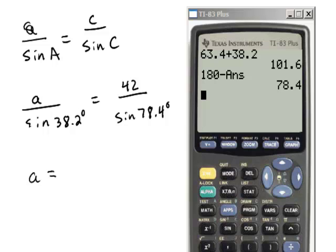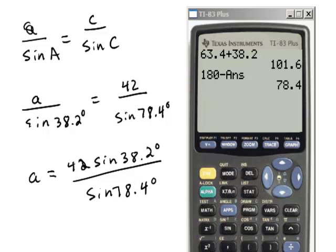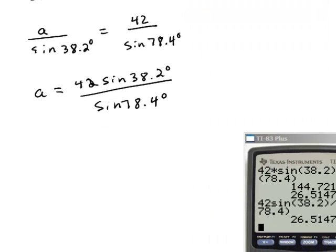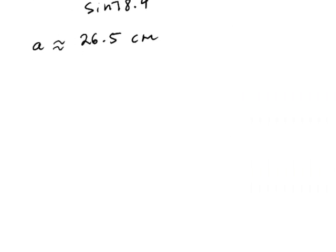That tells me that A equals 42 times the sine of 38.2 degrees divided by the sine of 78.4 degrees. We punch that into the calculator and find that A is approximately 26.5 centimeters. That's side A.